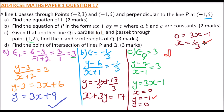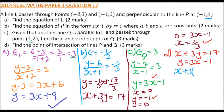Part d: find the point of intersection of p and q. The equation of line p is x + 3y = 17, and the equation of q is y = 3x − 1. Since at the point of intersection the values of x and y are equal, we substitute y = 3x − 1 into the first equation: x + 3(3x − 1) = 17.